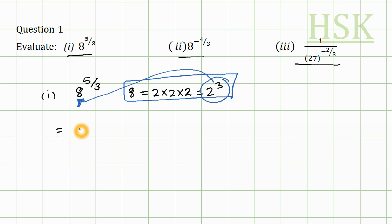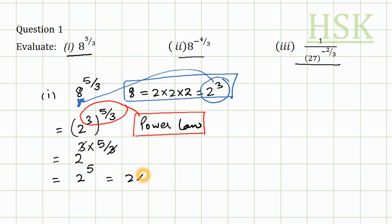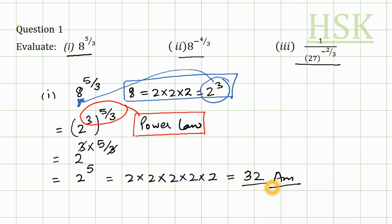This would be 2 to the power of 3, whole to the power of 5 by 3. Now I'm going to apply the power law — these two powers, 3 and 5 by 3, are going to multiply. So this will be equal to 2 to the power of 3 into 5 by 3. The 3s cancel out, giving 2 to the power of 5, which equals 32. So this is my required answer.